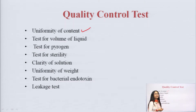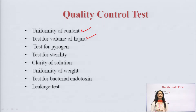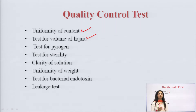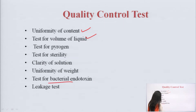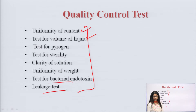The quality control tests we will learn are: number one, uniformity of content; number two, test for volume of liquid; number three, test for pyrogens; number four, test for sterility; number five, clarity of solution; number six, uniformity of weight; number seven, test for bacterial endotoxin; and number eight, leakage test.